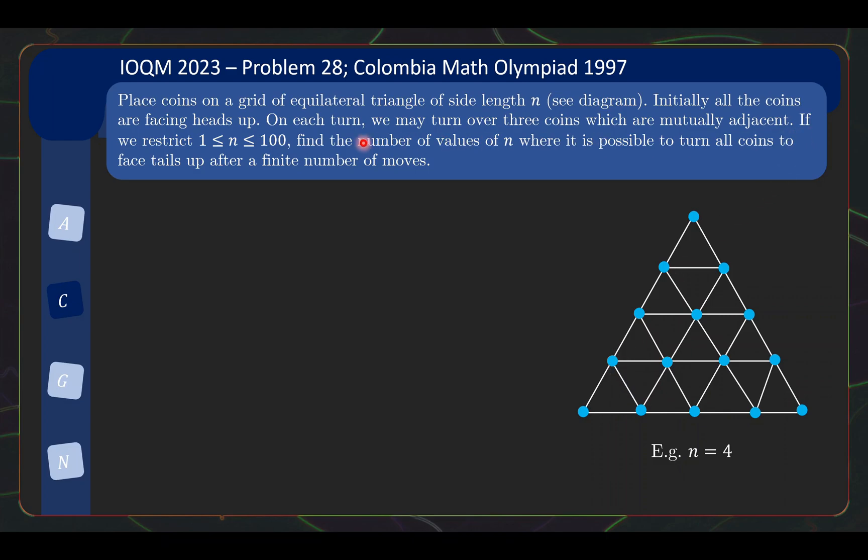So what we're supposed to do is if we look at all the n values from 1 to 100, we need to find the number of values of n where it is possible to turn all coins to face tails up after a finite number of moves. So in the original Colombia Math Olympiad, the question is to find all values of n for which it is possible to turn all coins from heads to all tails.